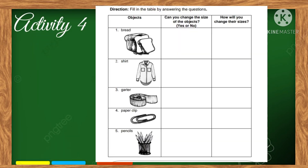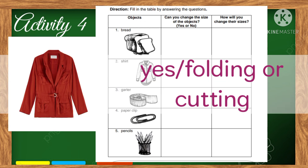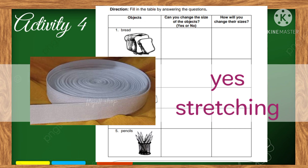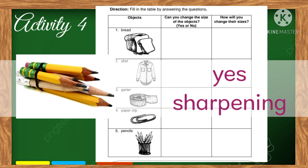Let's now proceed to activity number four — how does size change? Fill in the table by answering the questions. Can you change the size of bread? Yes, of course — by slicing it. We can also change the size of a shirt by folding or patting it. Stretching will change the size of a rubber band. Sharpening is one way of changing the size of a pencil.